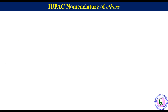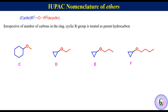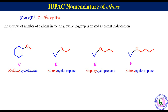In ethers with one cyclic R group and one acyclic R group, irrespective of the number of carbons in the ring, the cyclic R group is treated as the parent hydrocarbon. For example, the IUPAC names of compounds C, D, E, and F respectively are methoxycyclohexane, ethoxycyclopropane, propoxycyclopropane, and butoxycyclopropane.